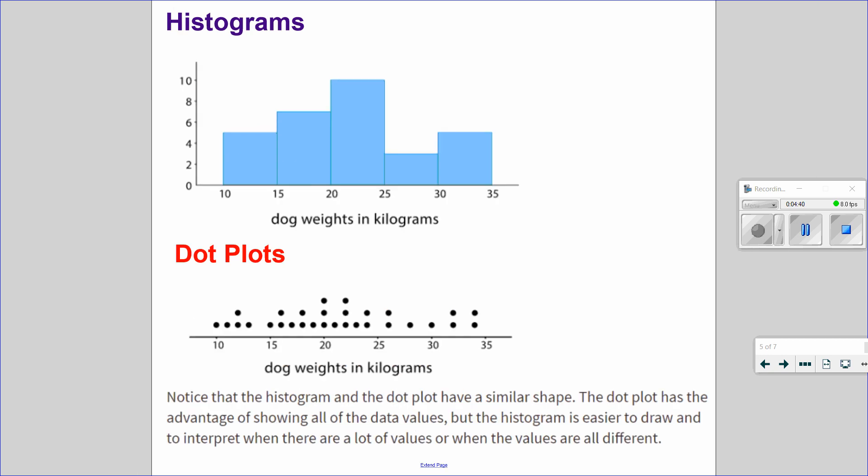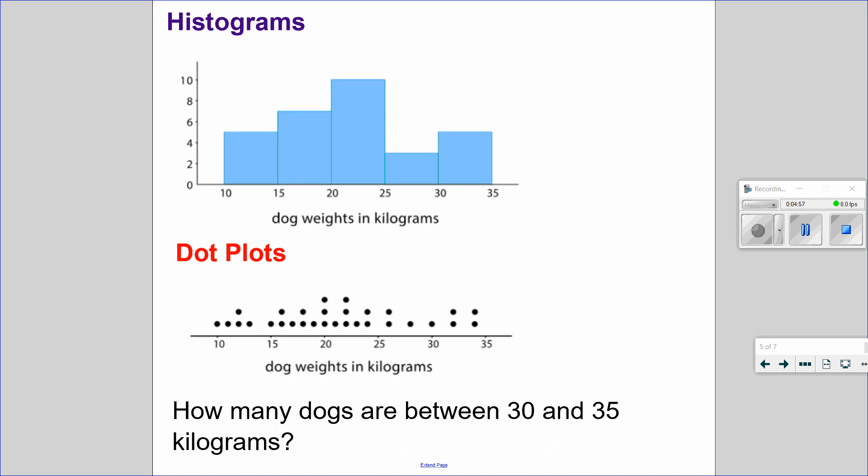Notice that the histogram and the dot plots have a similar shape. The dot plot has the advantage of showing all of the data values because here it has all of the specific numbers. But histogram is easier to draw and interpret when there are a lot of values or when the values are all different.